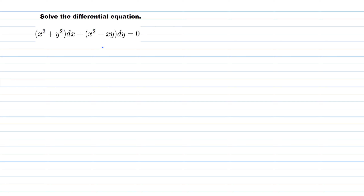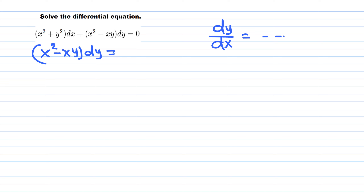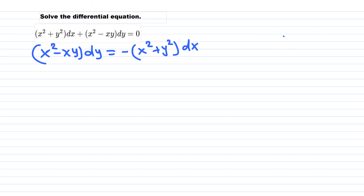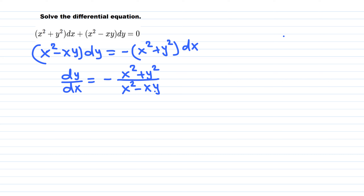Let's write this in derivative form, dy over dx equals something. We move the first term to the other side, so x squared minus xy dy equals negative x squared plus y squared dx. Dividing both sides, we get dy over dx equals negative x squared plus y squared, all divided by x squared minus xy.